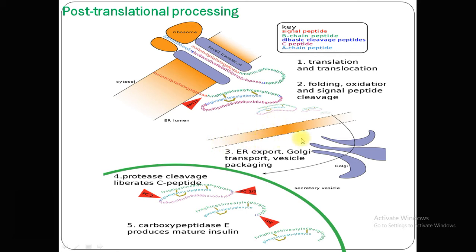Then the protein passes through the Golgi apparatus and then passes into Golgi vesicles for transport. In the vesicle, more parts are cut off and it is turned into mature insulin. As you can see, carboxypeptidase E produces mature insulin. This is the mature insulin, and this was the native or newly synthesized polypeptide. After post-translational modification, mature insulin is produced.